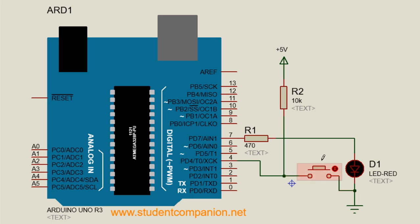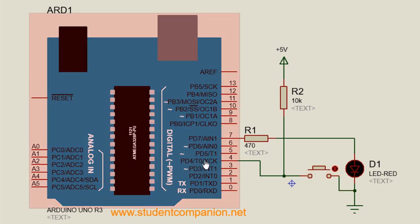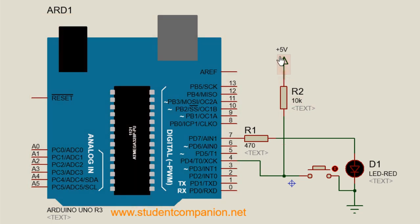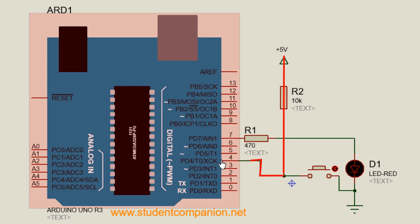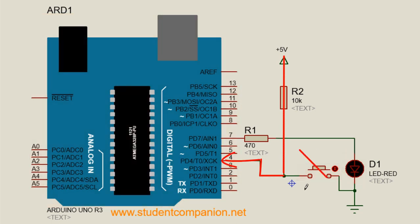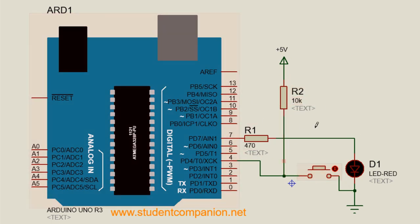If the switch is open or the push button is not pressed, Arduino input pin D4 will be high, because current flows from the positive supply through the resistor to D4 with no other path. When the push button is pressed, D4 goes to zero because all the current flows through the resistor through the push button to ground. Generally a value of 10k should do the job.